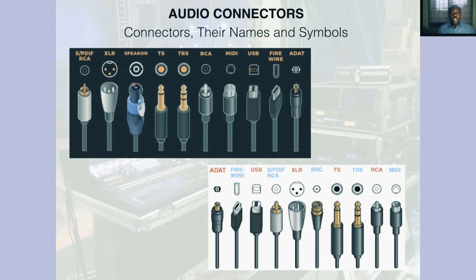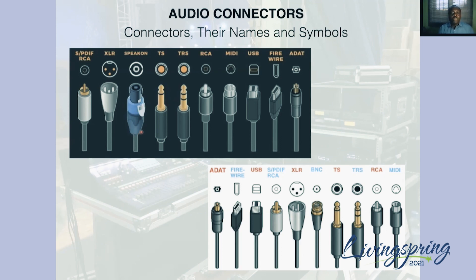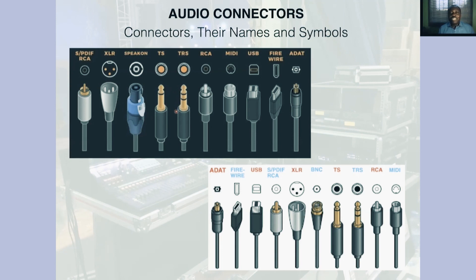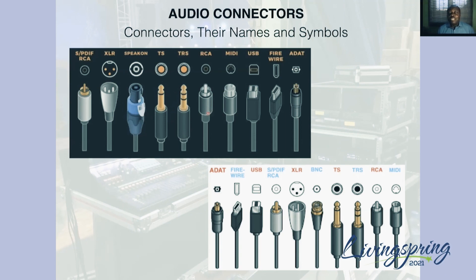Speakon plugs come in three main varieties: two-pin speakon for connecting single speakers, four-pin speakon for connecting bi-amp systems — in other words, two speakers — and the eight-pin system that can connect up to four speakers. They are also locking connectors; once plugged in, you have to unlock them before pulling them out. Then we have the two versions of the commonly known jack plugs: the TS version and the TRS version. And then the basic RCA, which you find on the back of cassette players, CD players, and generally consumer products.